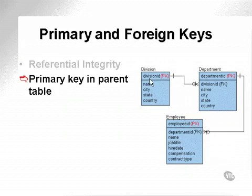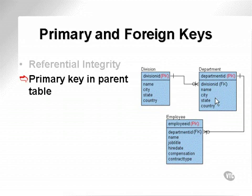The primary key is placed in a parent table. Here we can see an example of a division within a company with multiple departments within that division, where there is a foreign key placed in the department table which references the division table. A department does not have to exist for a division — in other words, you could have a division without any departments. The department table also has a primary key as department ID, which is placed into the employee table as a foreign key, meaning an employee has to be part of a department. But you don't necessarily have to have any employees to have department entries.